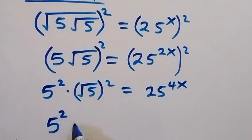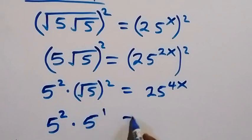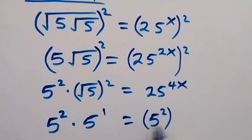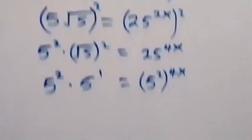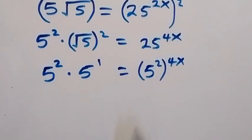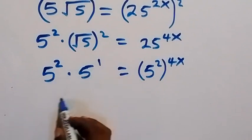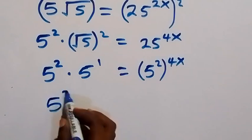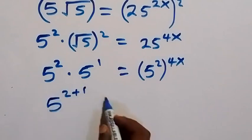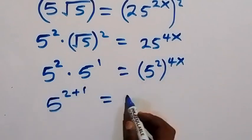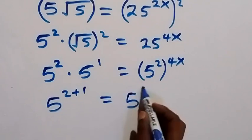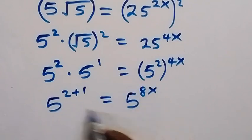The square cancels the square root, giving us 5 squared times 5 raised to power 1, which equals 5 squared raised to power 4x. Now 5 squared is the same as 25. Applying the law of indices, we combine the powers: 5 raised to power 2 plus 1, which equals 5 raised to power 8x.